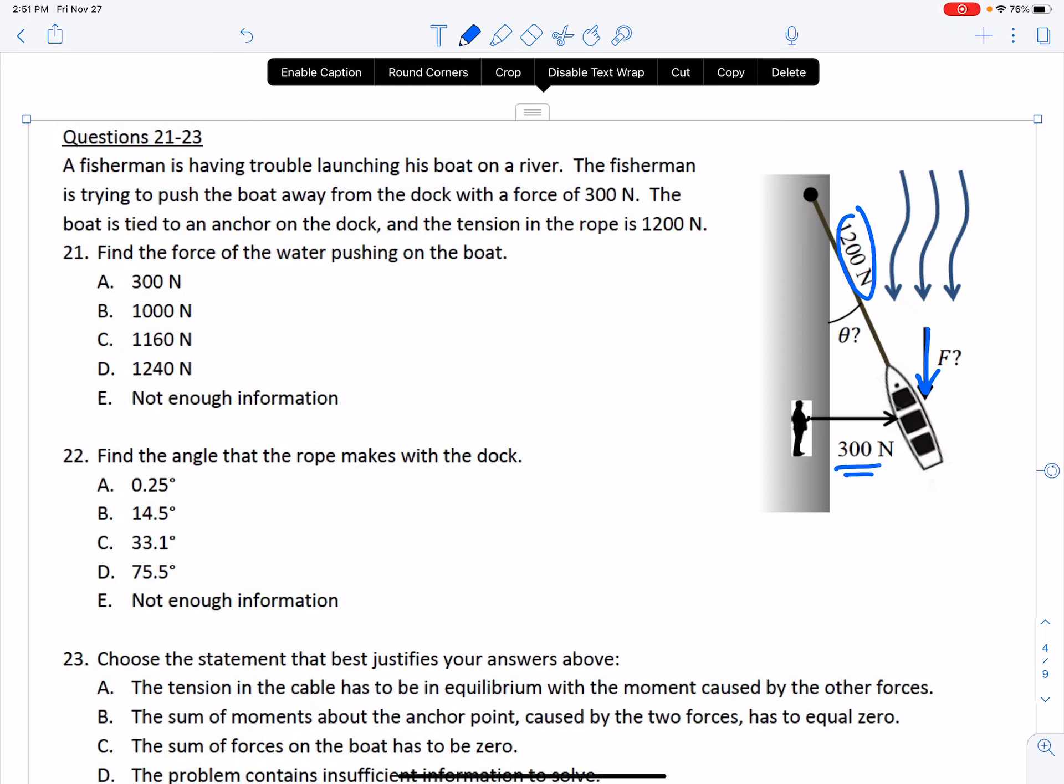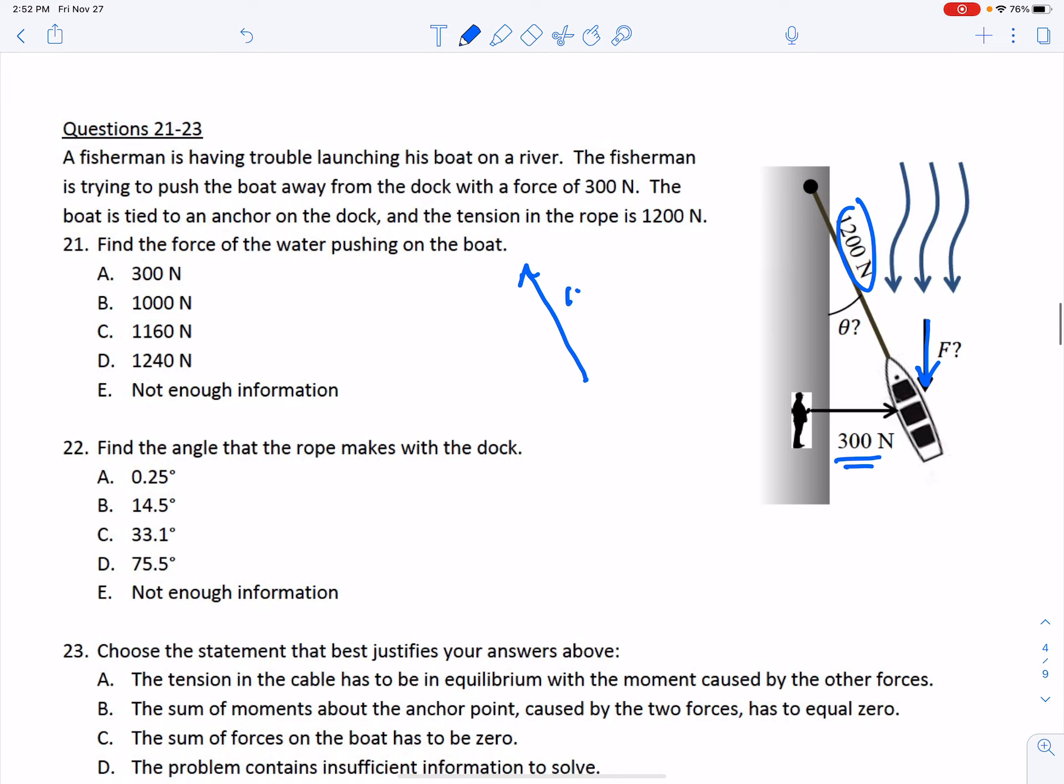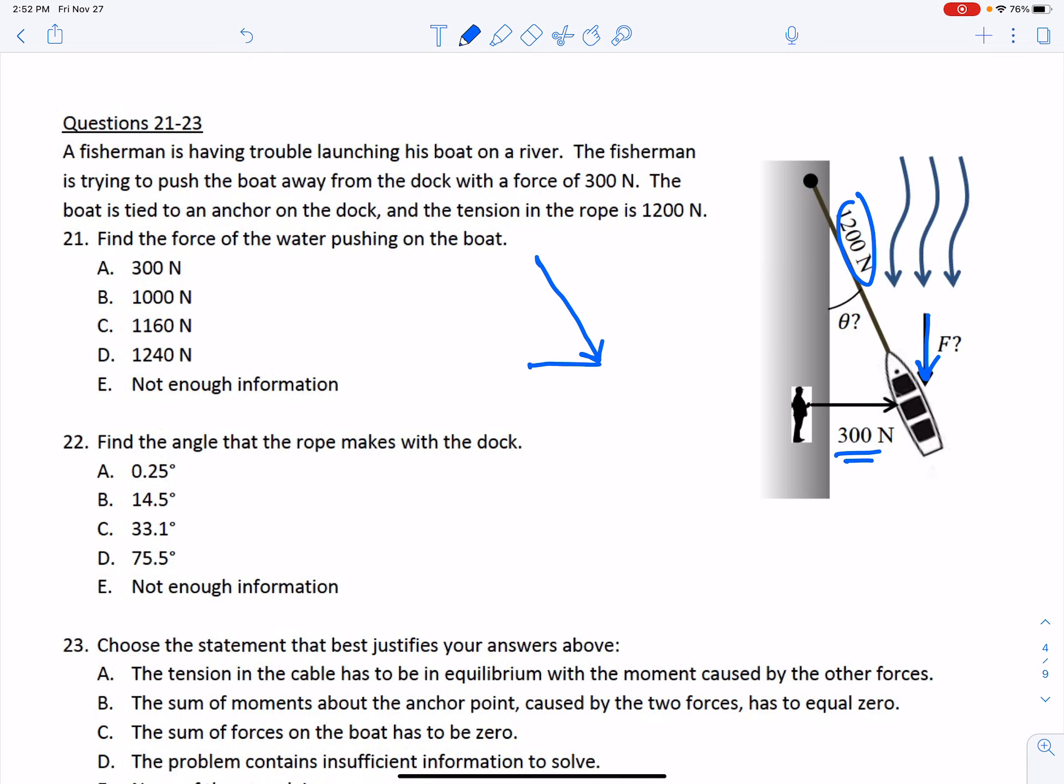So the idea here is it's a word problem that makes a force diagram. We have this acting at 1200 newtons. Then we have this at 300 newtons, and we're wondering what this force would be.